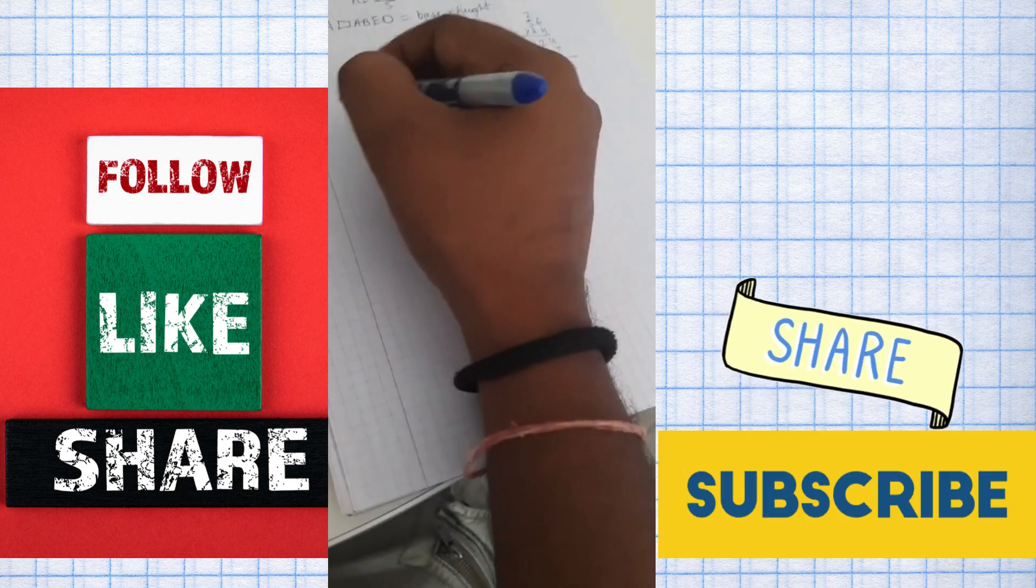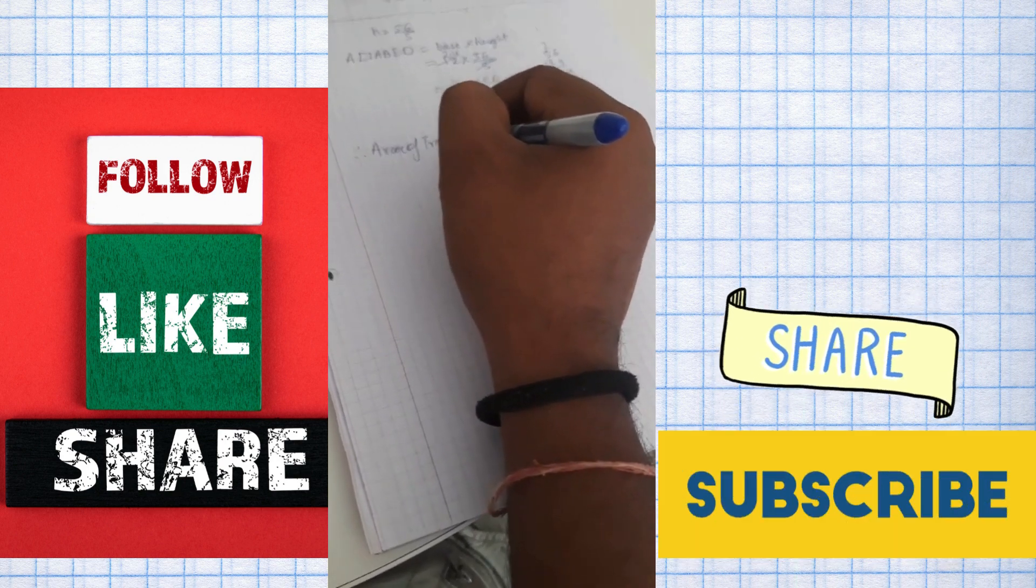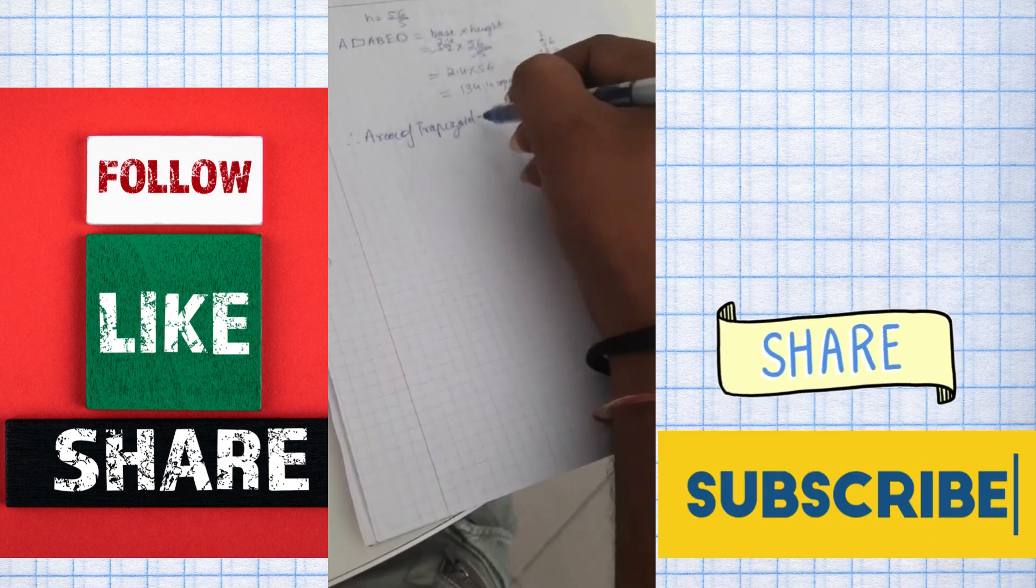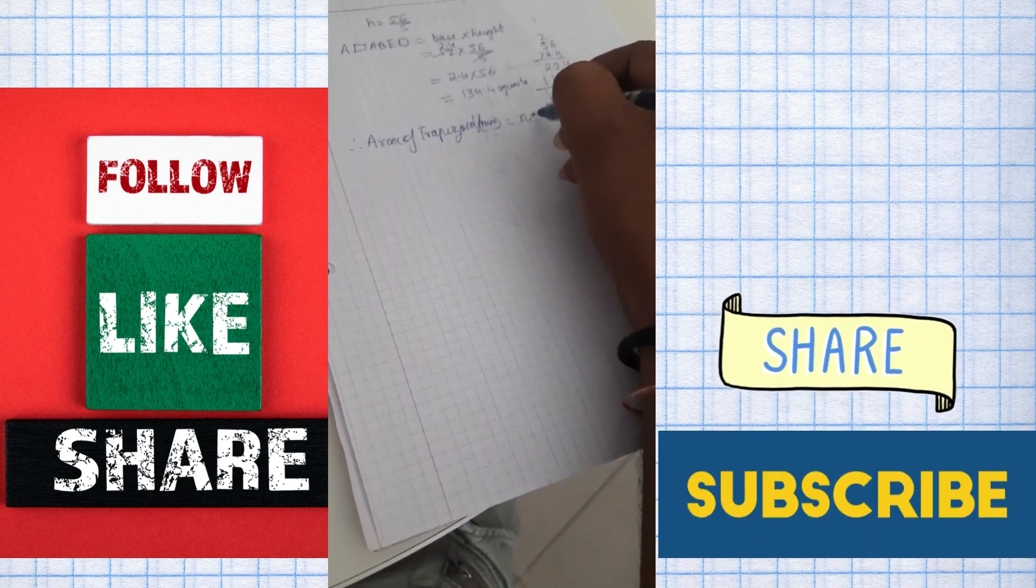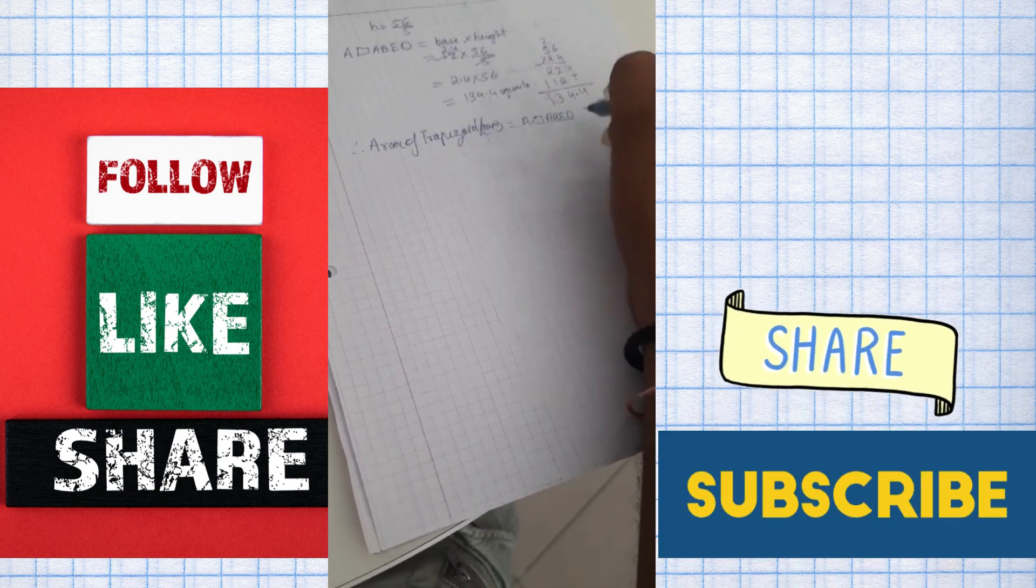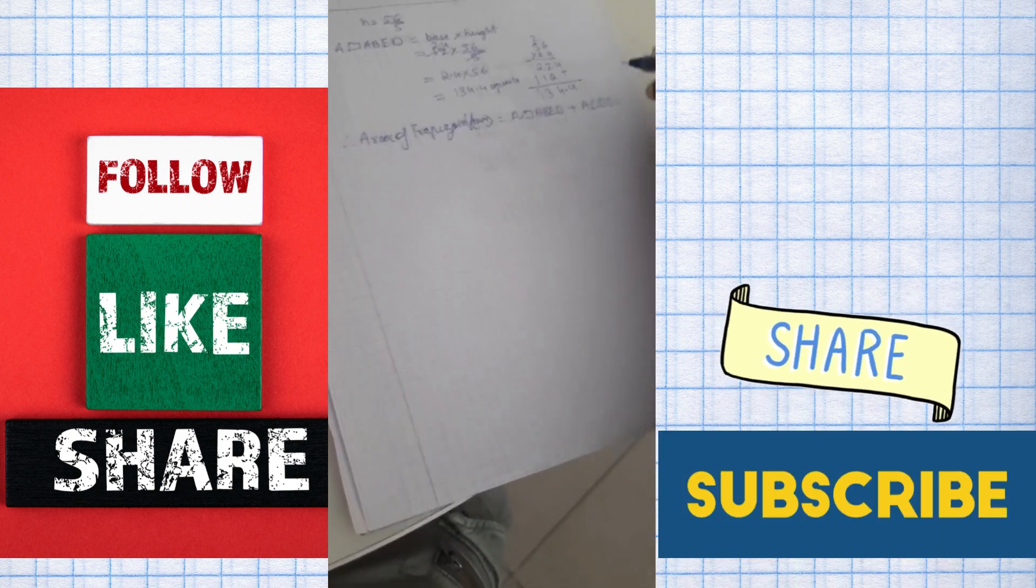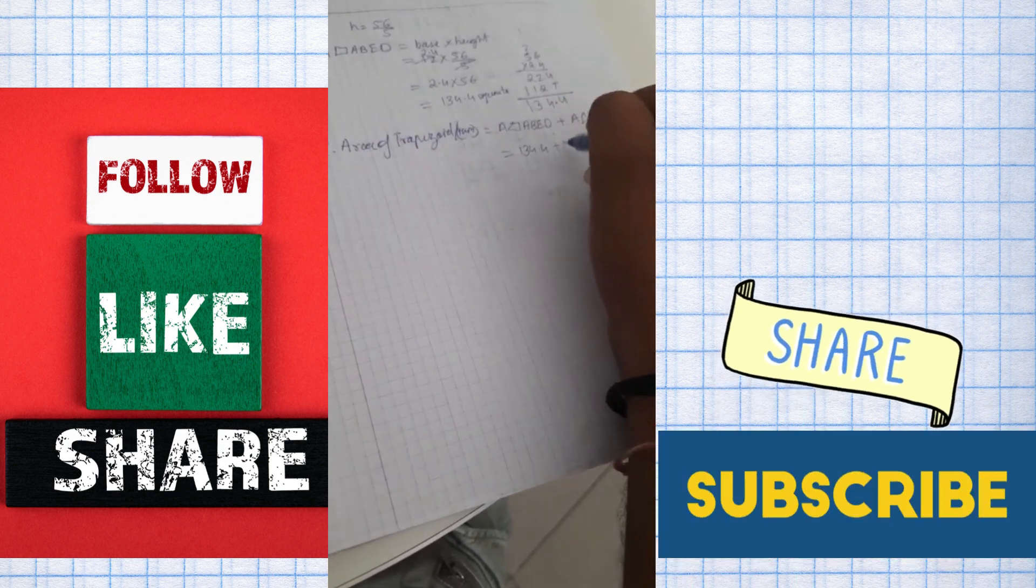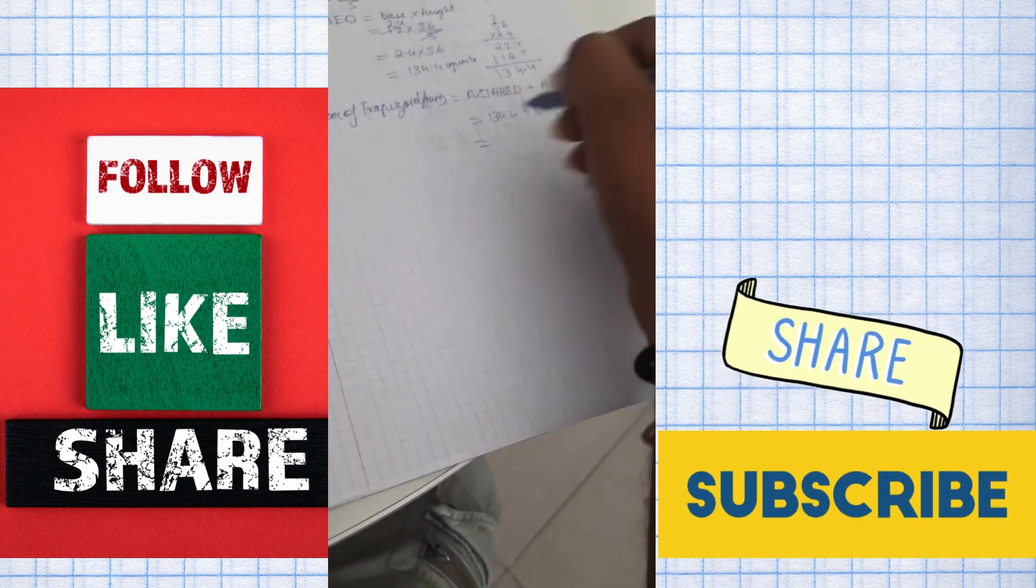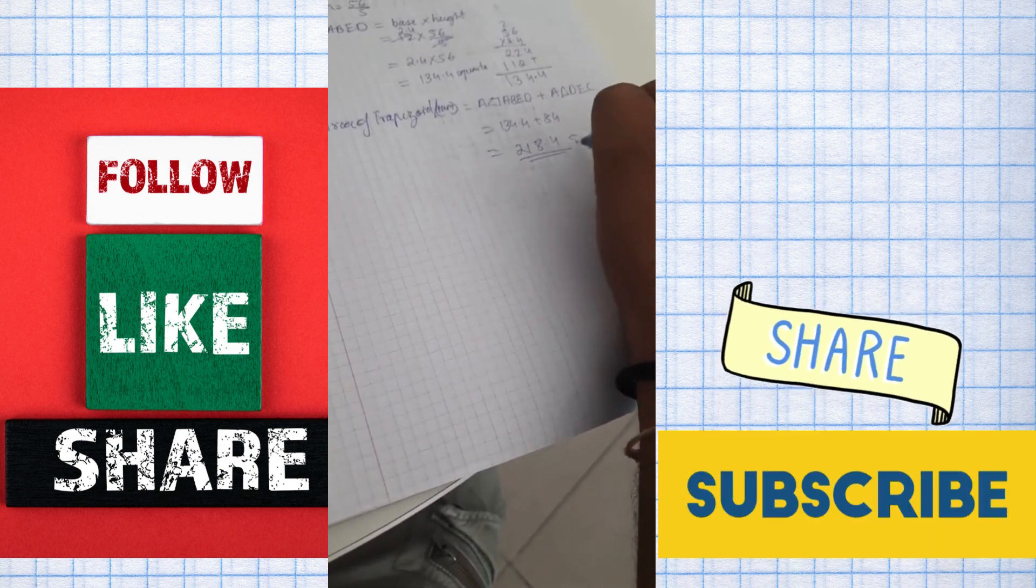Now, therefore, area of trapezium or trapezoid is equal to area of parallelogram A, B, E, D plus area of triangle D, E, C, which we already know is 84. So we got 134.4 plus 84, which is 218.4 square units. And that's it.